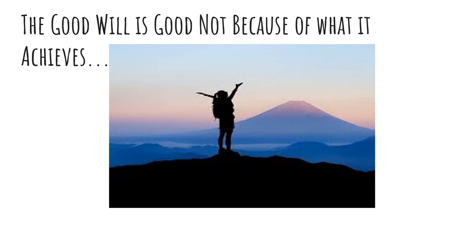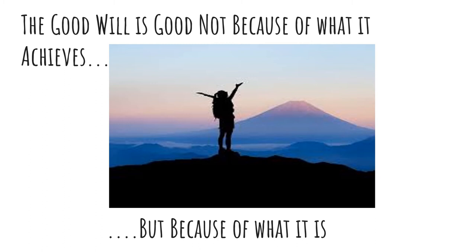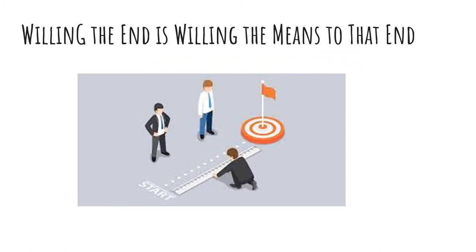Kant starts by describing what he calls the good will. When thinking about the good will, he points out that if we will something good, it has to be good not because of what it achieves — not because of the result — but because of what it actually is. The meaning behind calling something good is that its very being is good. So if the good will is in fact good, it has to be good because it already is good.